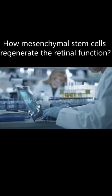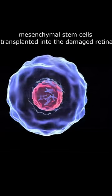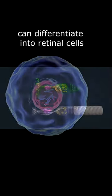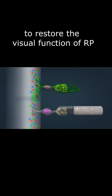How do mesenchymal stem cells regenerate retinal function? A number of studies have shown that mesenchymal stem cells transplanted into the damaged retina can differentiate into retinal cells and even integrate into the retina to restore the visual function of RP.